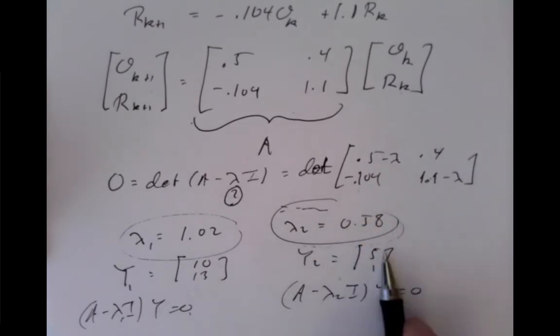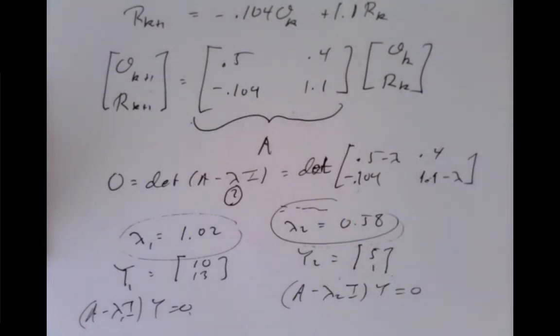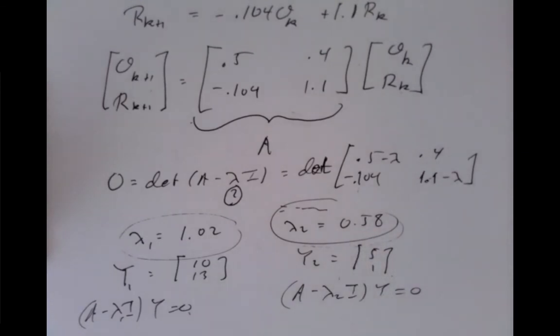And so if you had roughly this concentration, 5 times as many owls as rats, then over time you'd expect that every month you'd multiply by about 0.58 the numbers of owls and the numbers of rats. So they'd both go down together, and you'd shrink down to nothing. And so in particular,